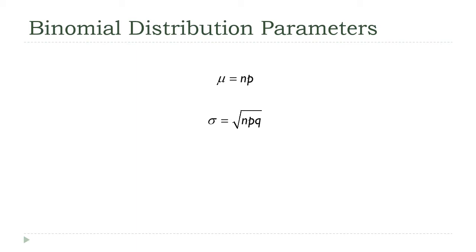The mean is NP and the standard deviation is the square root of NPQ. You remember what these are, right? N is the number of trials and P is the probability of success.